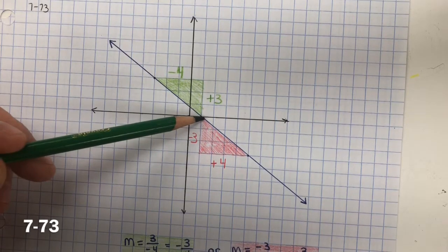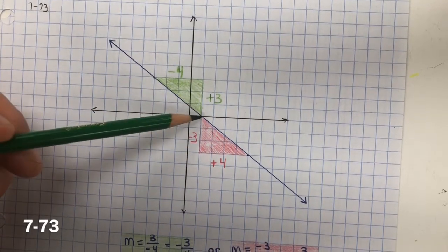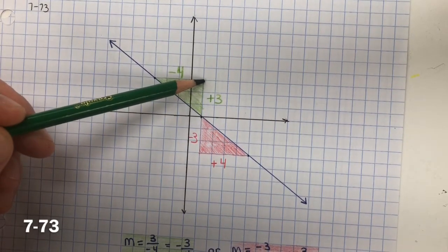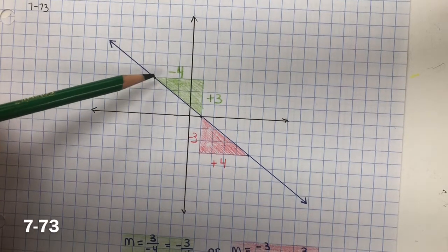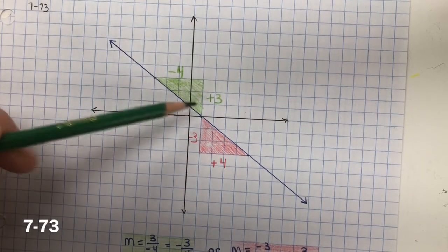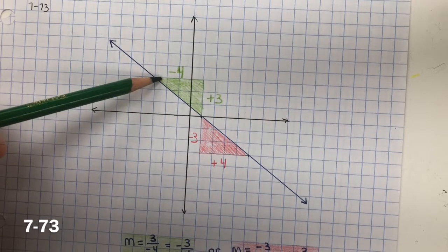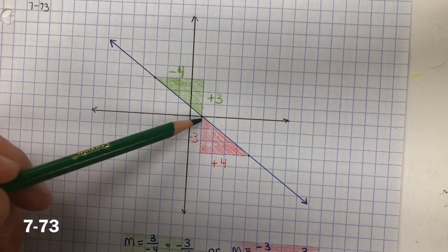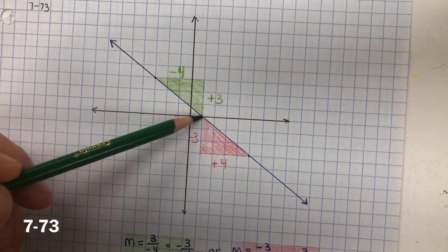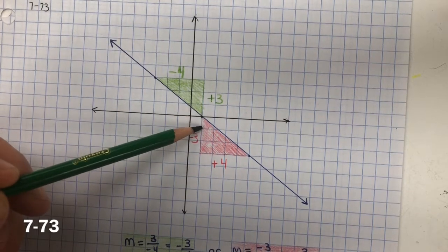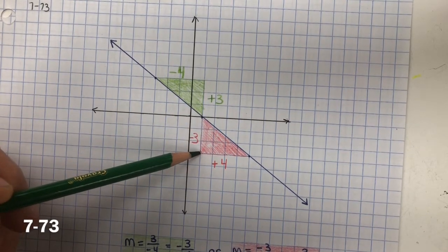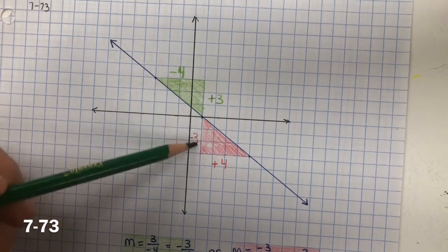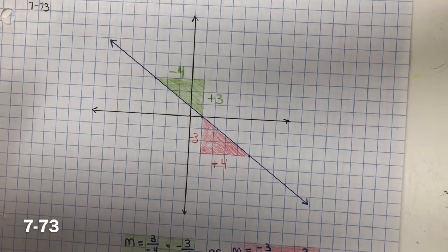Next, we're going to count from one lattice point to another. If I count positive 1, positive 2, positive 3, and then now negative 1, negative 2, negative 3, negative 4. Remember, rise over run. So the slope is a negative 3 fourths. And if I would have calculated the slope from the bottom of the line, negative 1, negative 2, negative 3 over positive 1, 2, 3, 4, either way you'd still get a negative 3 fourths.